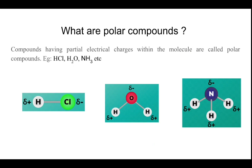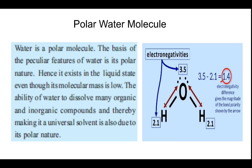Polar compounds are compounds having partial electrical charges within the molecule. Examples include hydrogen chloride, water, and ammonia, as shown in the diagram. Water is a polar molecule. The basis of the peculiar features of water is its polar nature — hence it exists in the liquid state even though its molecular mass is low. The ability of water to dissolve many organic and inorganic compounds, making it a universal solvent, is also due to its polar nature.